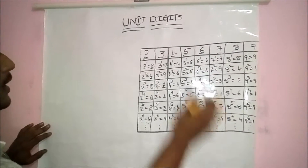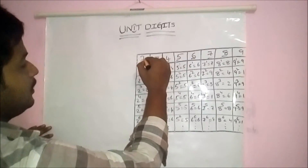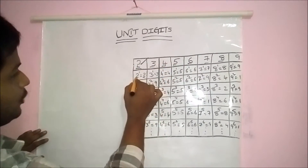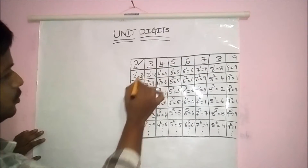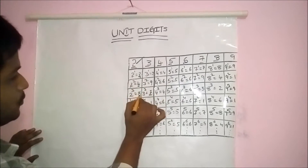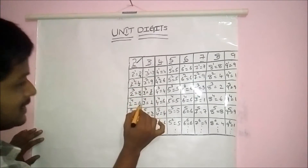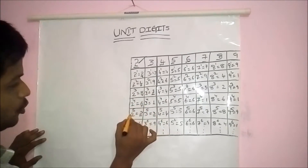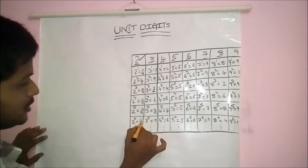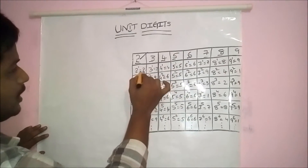Look at the table carefully. Here we have to observe the unit digit of 2 first. 2 power 1 is 2, 2 squared is 4, 2 cubed is 8, 2 power 4 unit digit is 6, 2 power 5 unit digit is 2, 2 power 6 unit digit is 4. Look here carefully.